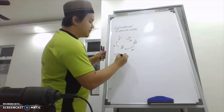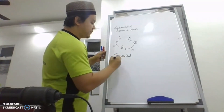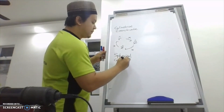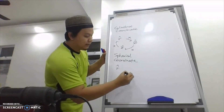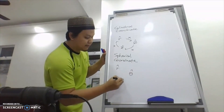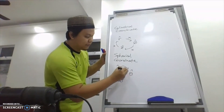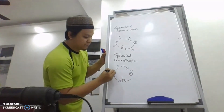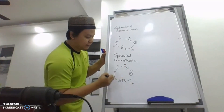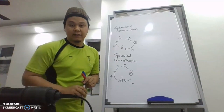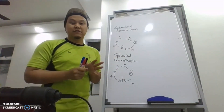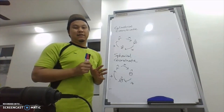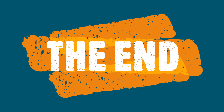For spherical coordinates, the components are R, theta, and phi — this is the sequence. The same rule applies. Hopefully this is clear, because if the sign is wrong, your answer will be wrong.